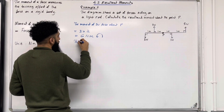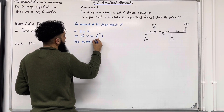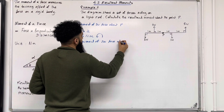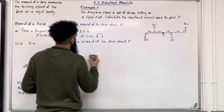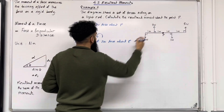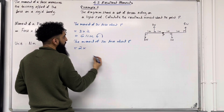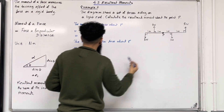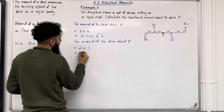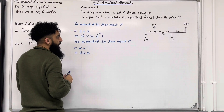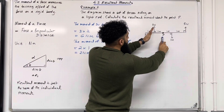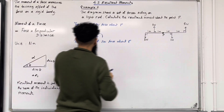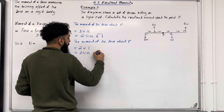Now let's find the moment of the 2 newton force about P. This equals 2 newtons multiplied by the perpendicular distance from P, which is 1. So 2 times 1 is 2 Newton meters. If I hold on to point P, this 2 newton force will take the entire body clockwise. So we have 2 Newton meters going clockwise.